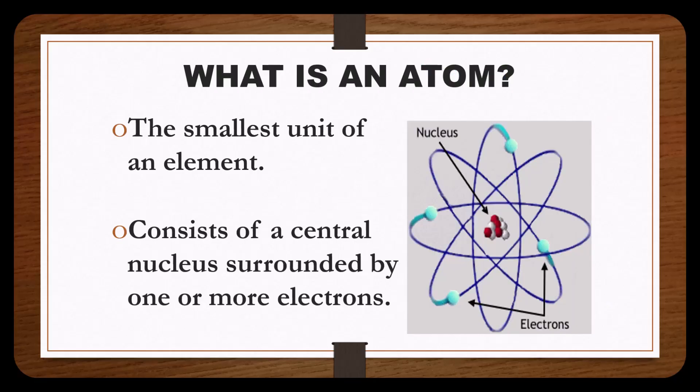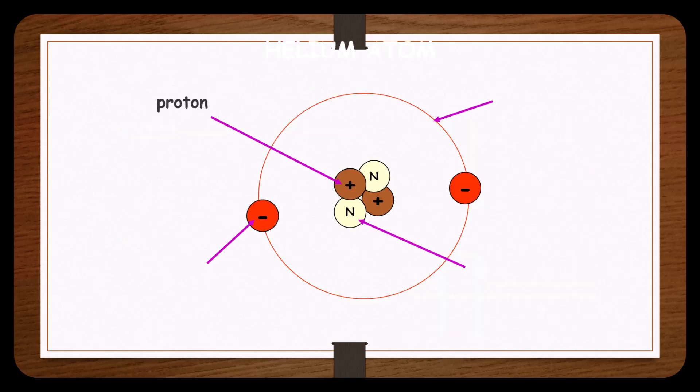An atom is the smallest unit of an element. It consists of a central nucleus surrounded by one or more electrons. In the center, there is a proton and a neutron, and on the outside, there is an electron that is in orbit called a shell.